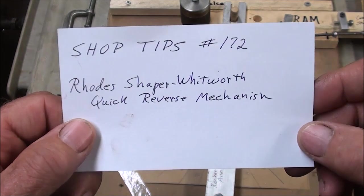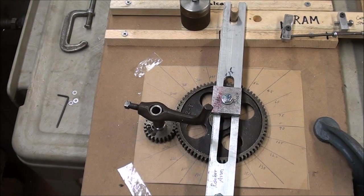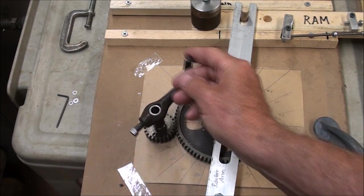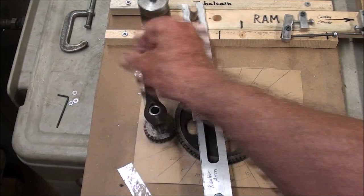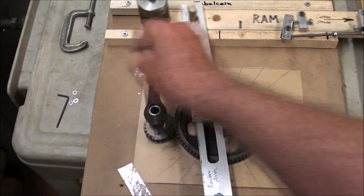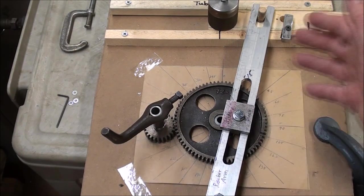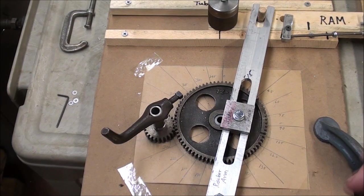Now, if you did not watch this number 172, you need to go back and do that, or this will not seem to make any sense to you, because I'm not going to repeat everything that I said on the first one, but the whole idea here is that with a shaper, the return is faster than the forward motion, and the reason for that was, of course, so that you didn't waste as much time, because it's only cutting on the forward motion.